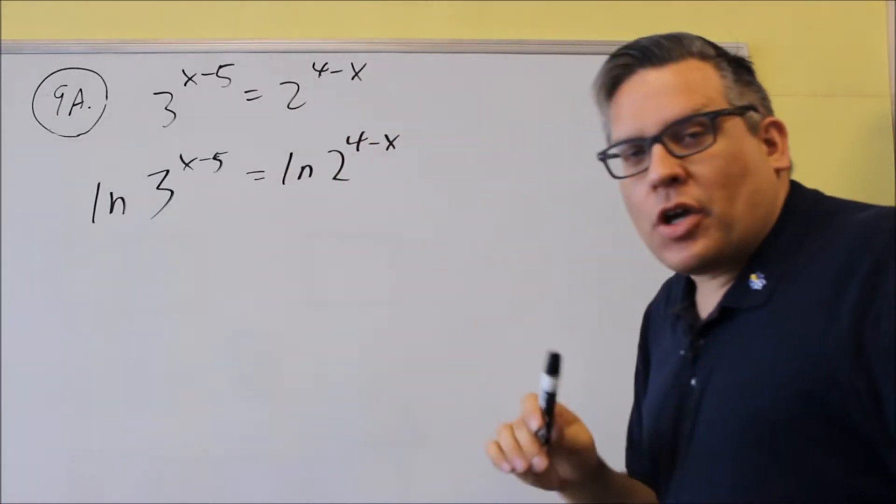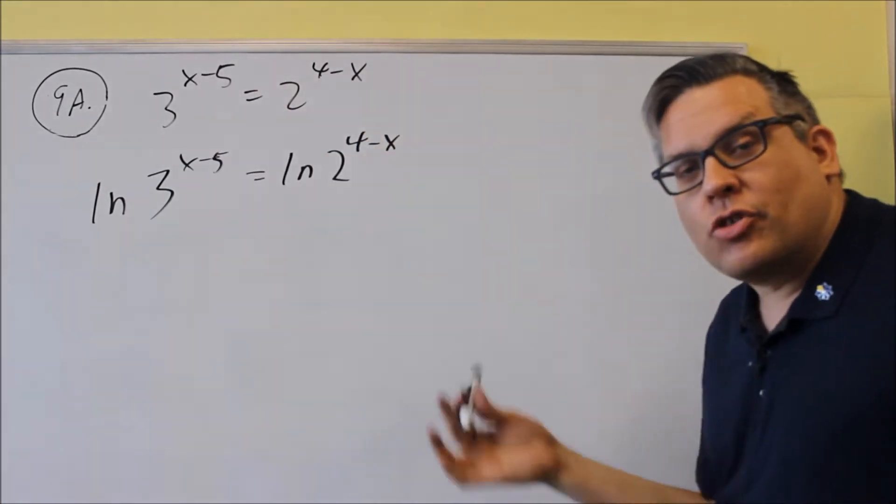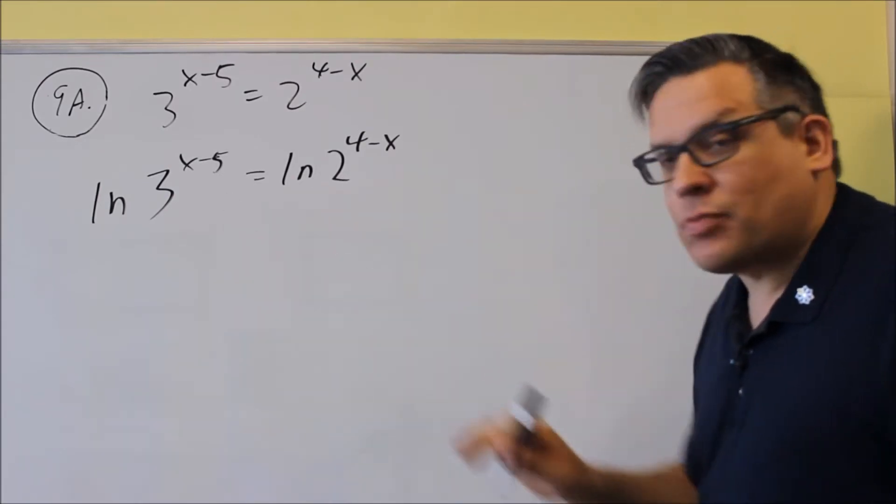If these were able to be the same, then we could just set the exponents equal. But this is different now because we have a 3 and a 2, and we can't make those bases match. So that's why we're doing this process.